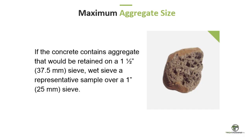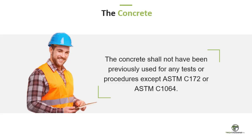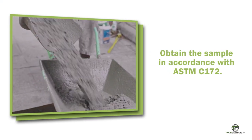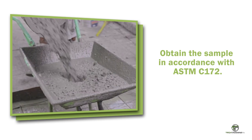If the concrete contains coarse aggregate particles retained on a 1.5 inch or 37.5 millimeter sieve, wet sieve a representative sample over a 1 inch or 25 millimeter sieve to yield somewhat more than enough material to fill the measuring bowl. The wet sieving procedure is described in ASTM C172. The concrete used to fill the measuring bowl shall not have been previously used in the performance of any other test or practice, other than wet sieving or the temperature test. We must obtain our sample in accordance with ASTM C172, standard practice for sampling freshly mixed concrete.